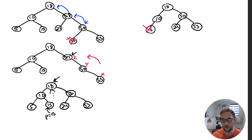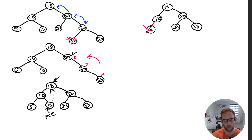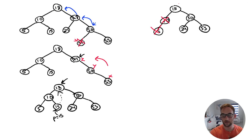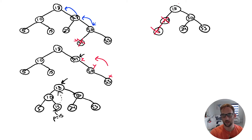We go to 10, which is now also a leaf node — balanced. Then up to 15: left subtree height 1, right subtree height 2; 1 minus 2 is negative 1 — balanced. Next, let's also delete 10, which is a leaf node. Going to its parent: the left subtree of 15 has height 0, the right subtree has height 2; 0 minus 2 is negative 2 — the tree is imbalanced at this node.